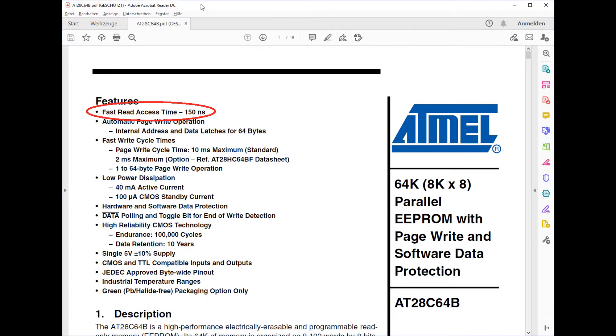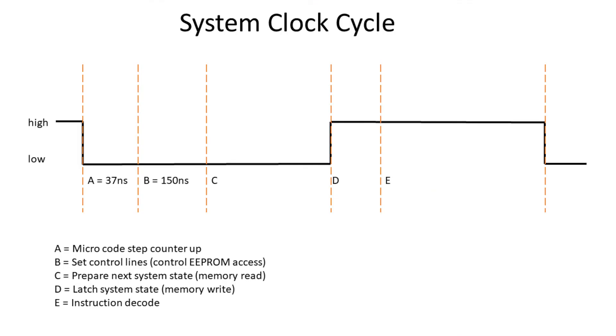For the access time of the control EEPROM which is phase B, I just take the easy way and look at the marketing part of the datasheet. And that tells me the EEPROM will take 150 nanoseconds. Now we have the times for the first two phases, phase A and phase B.